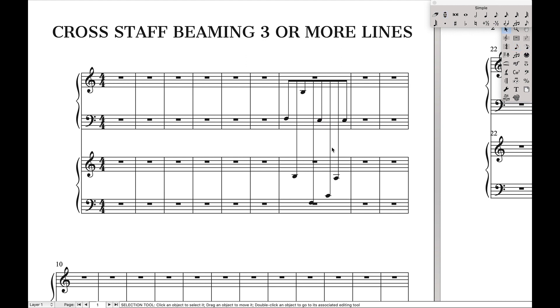And then we still have these default whole rests. We're going to come over here. We're going to create a new rest and then hide it. That way it won't appear at all in the final printed product. So that's it. That's how you cross staff beam on four or more staves.